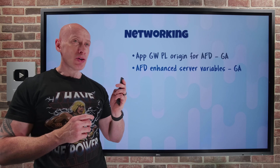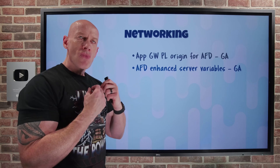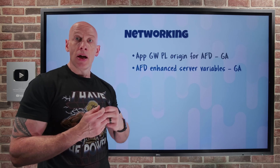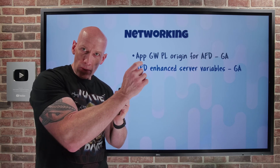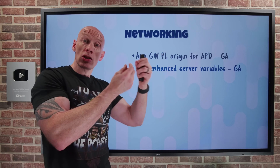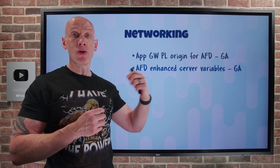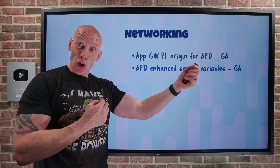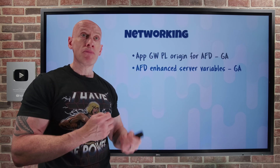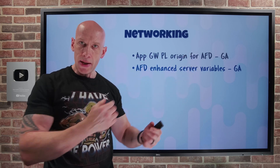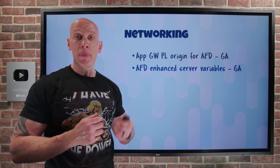Additionally, Azure Front Door now has enhanced server variables in GA. As communications happen, there are various request and response headers, and even specific request query string values. These values are now put into server variables, which can be used in the rules engine of Azure Front Door. As part of my rules, I can use those values to make routing decisions or perform modifications as traffic comes in and goes out, giving a lot more granularity and flexibility at the Azure Front Door edge.